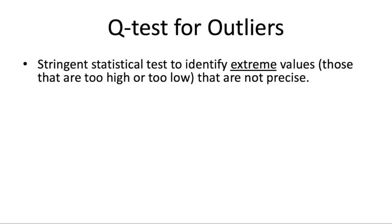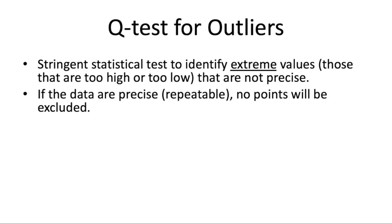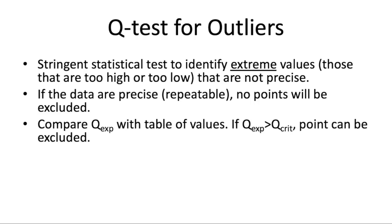Because you're going to be collecting class data for this experiment, we want you to do a Q test, which is a statistical test to identify outliers. It only works for extreme values — those that are too high or too low, on the edges of the data. You are going to need to be able to calculate this on the exam, so pay attention to how we do it. If the data are precise and repeatable, no points will be excluded; if they're imprecise, we may need to exclude an outlier. We compare our calculated Q value with a table of critical values to decide if the point can be excluded.